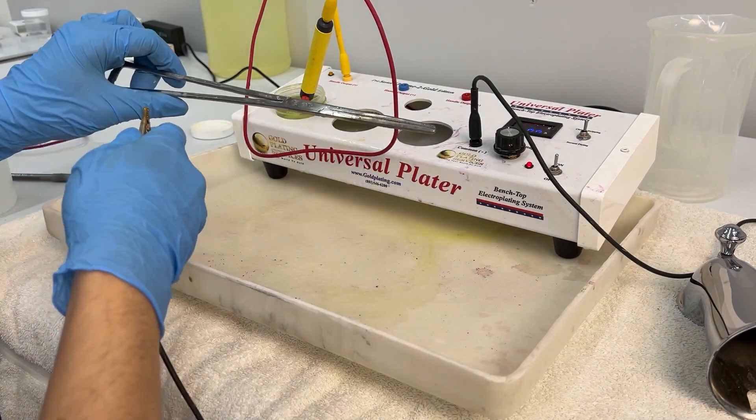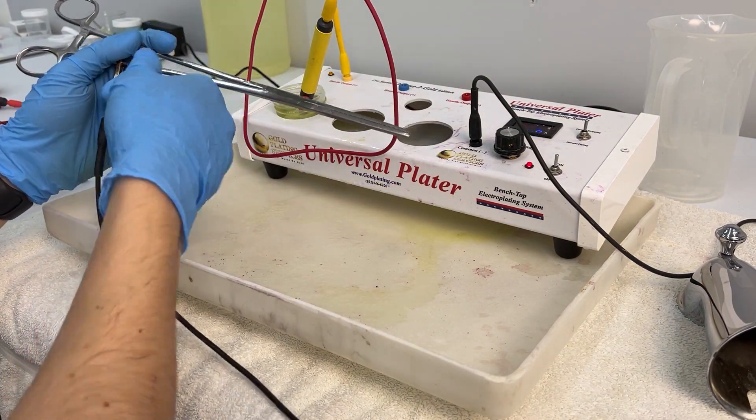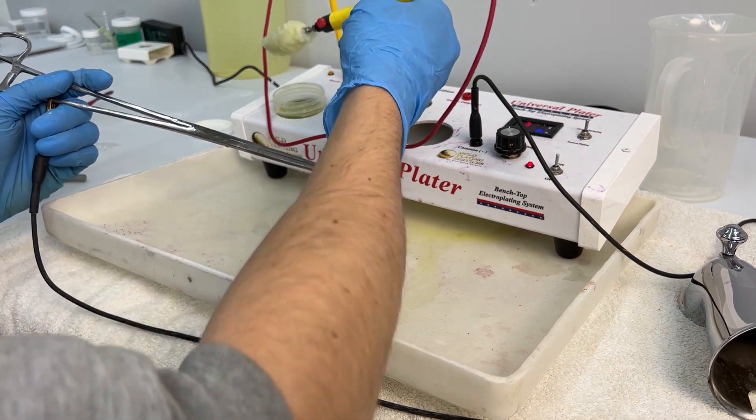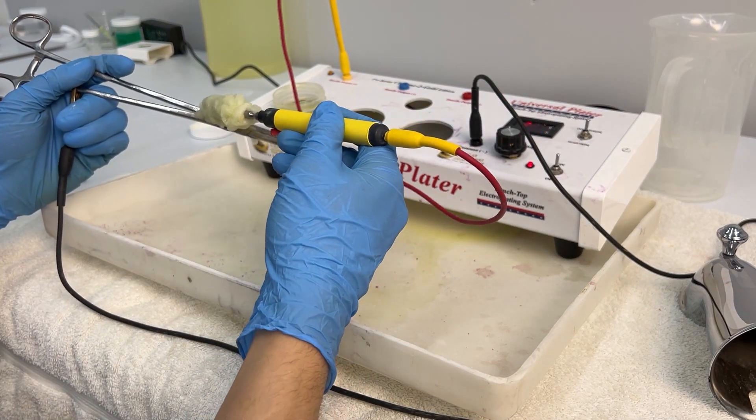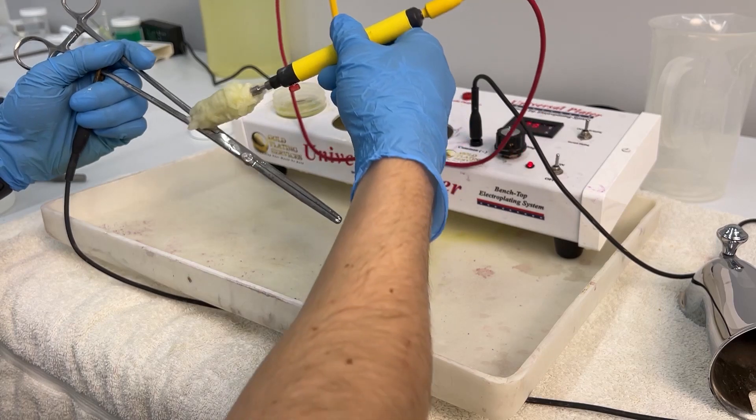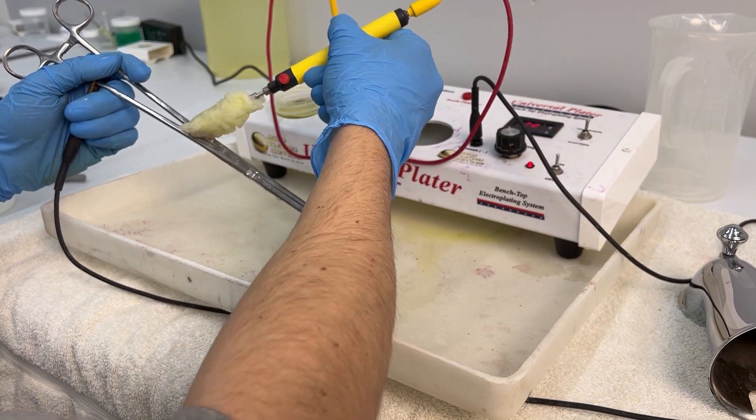So we're going to test our stainless steel now and stainless will turn a purple color, the solution will, onto the sleeve and it won't really do anything.